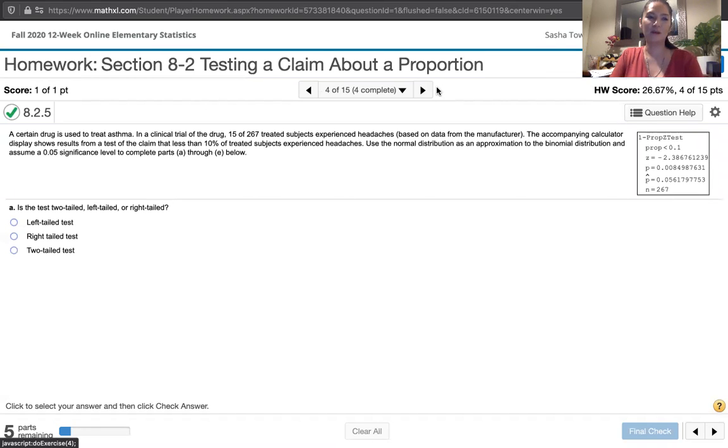In this video, we solve problem 8.2.5 from Essentials of Statistics, 6th edition by Mario Triola. The problem statement says a certain drug is used to treat asthma. In a clinical trial of the drug, 15 of 267 treated subjects experienced headaches based on data from the manufacturer. The accompanying calculator display shows results from the test of a claim that less than 10% of treated subjects experienced headaches. Use the normal distribution as an approximation to the binomial distribution and assume a 0.05 significance level to complete parts A through E below.